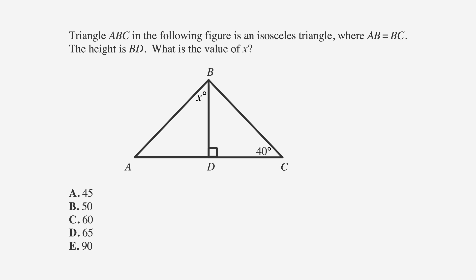The answer choices are all values of X. Let's first underline the facts: triangle ABC is an isosceles triangle, AB equals BC, and height is BD. Also, circle the value of X. We'll label the answer choices X since that's what we're looking for. It's also a good idea to circle X in the drawing to keep track of it.